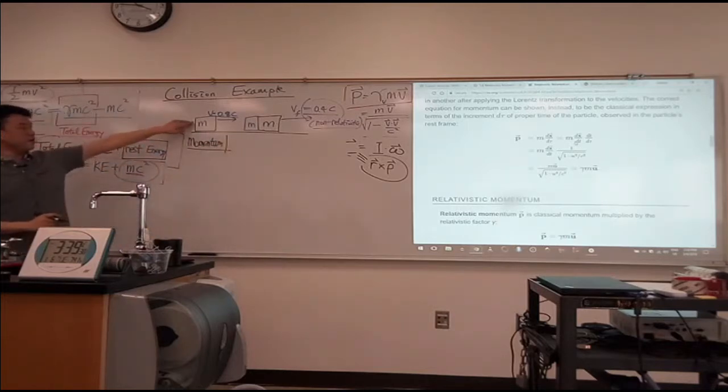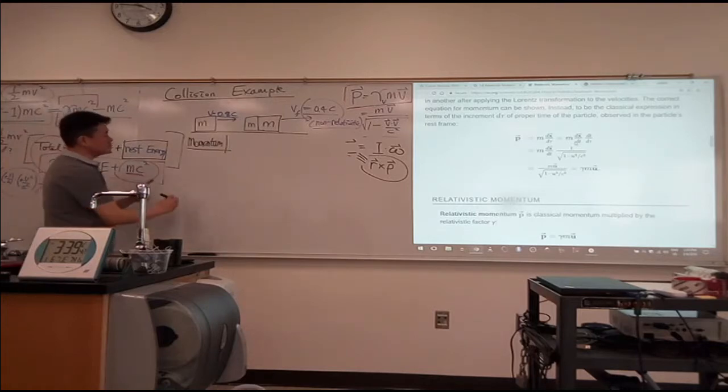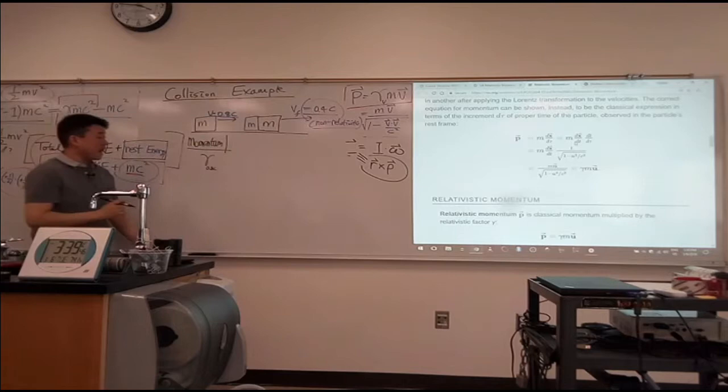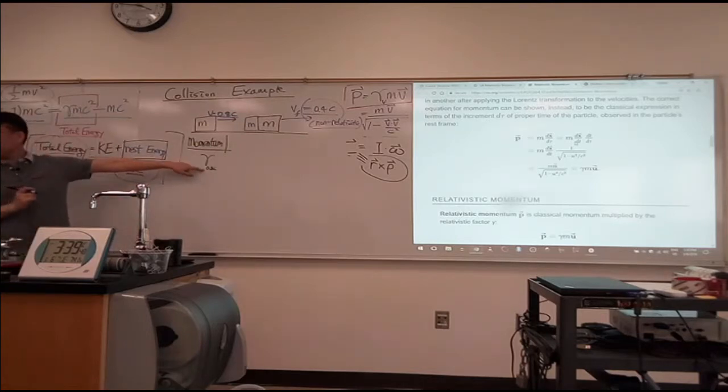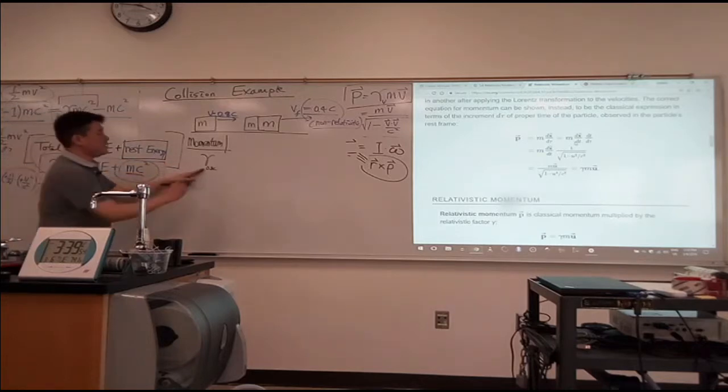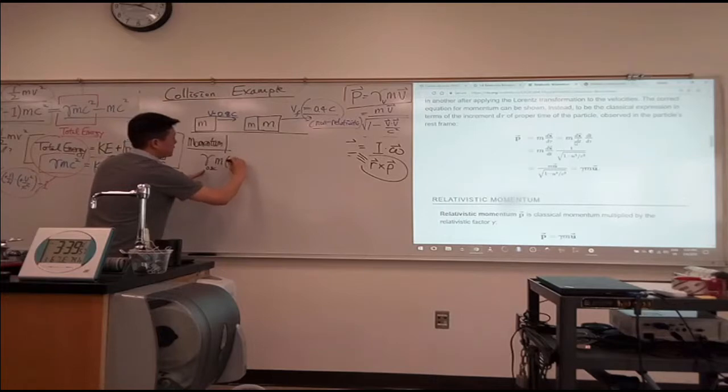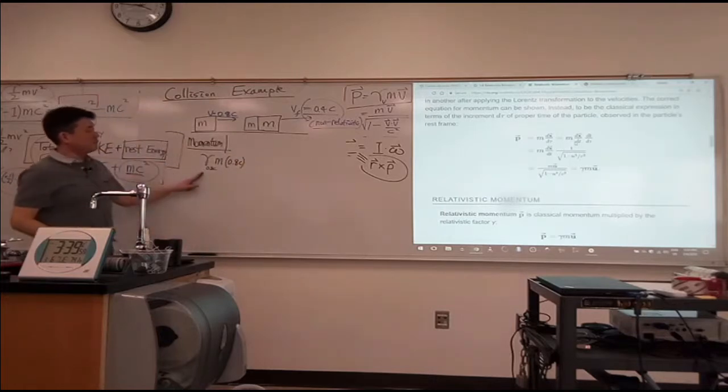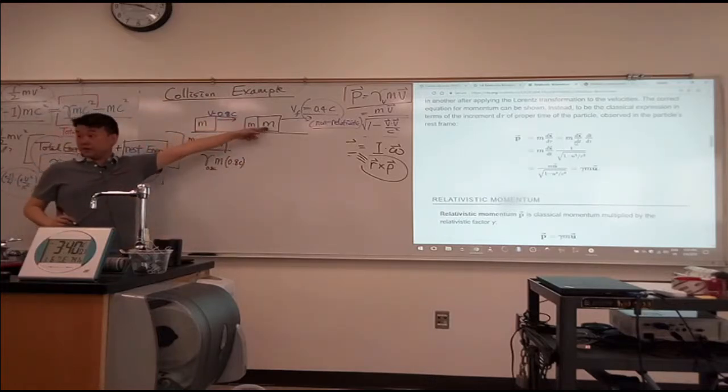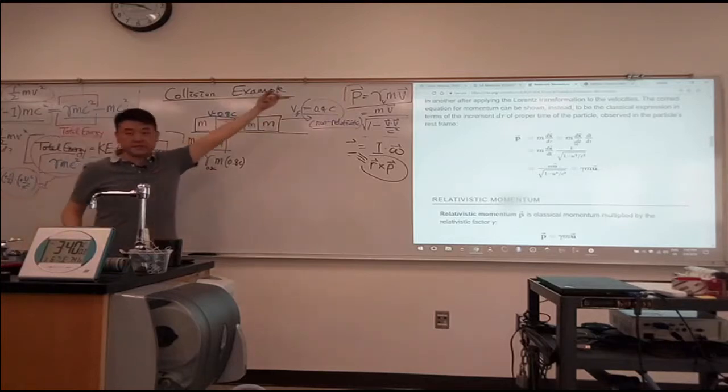So my initial momentum, that would be gamma based on 0.8C. I'm going to start subscripting gamma, because there's going to be multiple gammas based on different velocities. So gamma 0.8C times M times 0.8C plus 0. It's not moving. So gamma's 1, but V is 0. So it's 0 momentum.